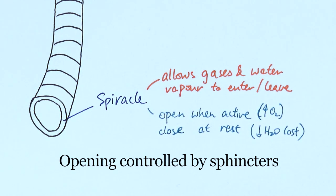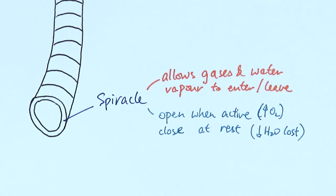When it's active, then it will open spiracles to allow more oxygen to come in. But if it's resting, when it's not flying, then it will close the spiracle to make sure that you're not losing excess water. So that's what the spiracle does.